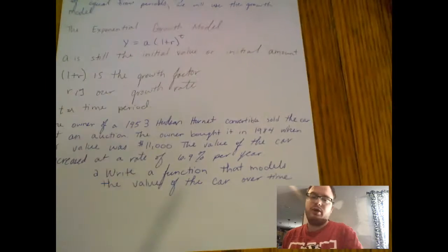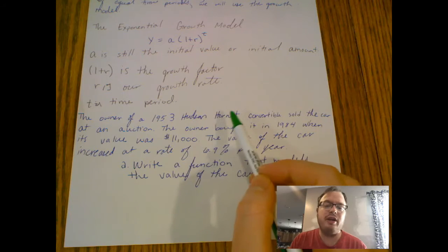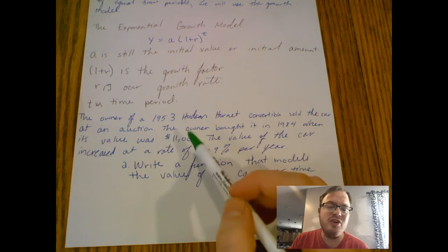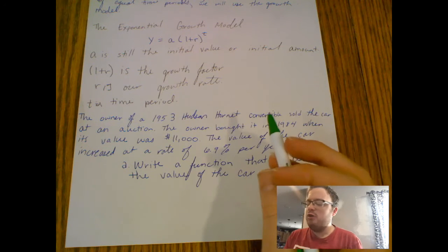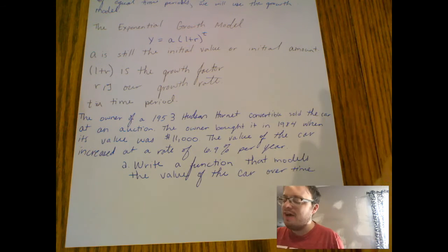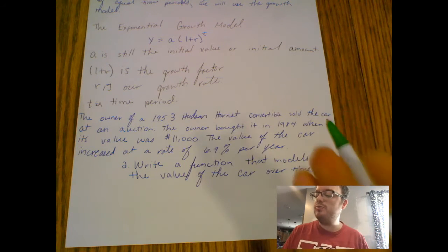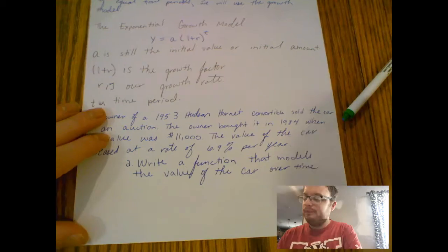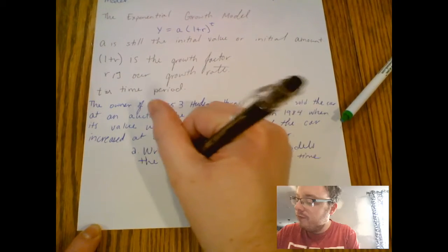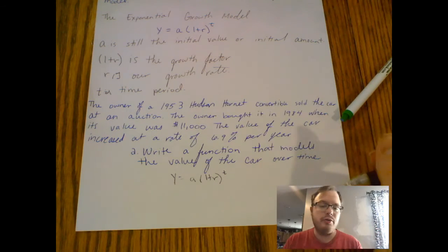This is going to be a quicker video because all I have is one word problem left. Here we have: the owner of a 1953 Hudson Hornet convertible sold the car at an auction. The owner bought it in 1984 when its value was $11,000. The value of the car increased at a rate of 6.9% each year. Write a function that models the value of the car over time. What is the equation in terms of y and t of the rate of the car?